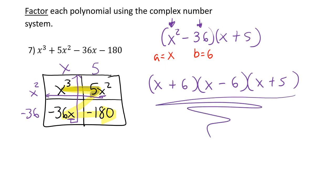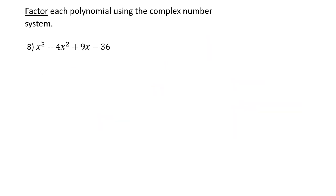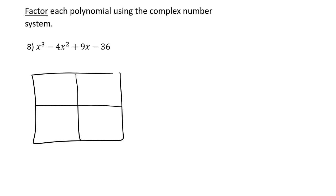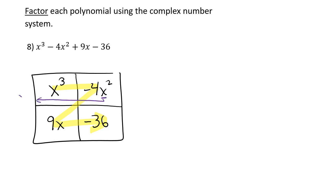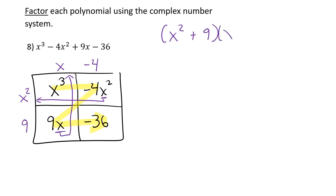Another four-term polynomial — use the box in a Z formation. Fill in x-cubed, negative 4x-squared, positive 9x, negative 36. Place x-squared on the side and x on top. x-squared times x gives x-cubed; x-squared times negative 4 gives negative 4x-squared; x times 9 gives 9x. So the factors are x-squared plus 9 and x minus 4.